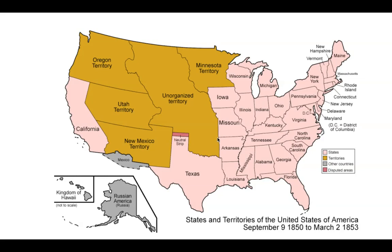Missouri's southern border theoretically outlawed slavery in all states north of it, including Kansas, Nebraska, Minnesota, the Dakotas, Montana, Wyoming, Iowa, Utah, Colorado, New Mexico, Arizona, Oregon, and Washington. All of these states should be free under the Missouri Compromise.